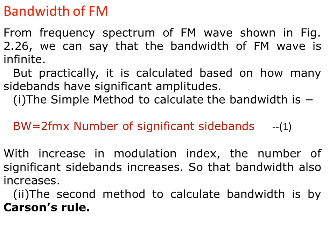Bandwidth of frequency modulation: from the frequency spectrum of the FM wave shown in the figure, we can say that the bandwidth of the FM wave is theoretically infinite. But practically it is calculated based on how many sidebands have significant amplitudes. A simple method to calculate bandwidth is BW equals 2·F_M multiplied by the number of significant sidebands. With an increase in modulation index, the number of significant sidebands increases, so the bandwidth also increases.